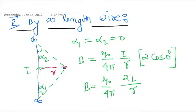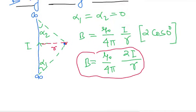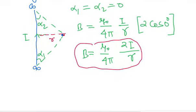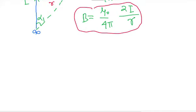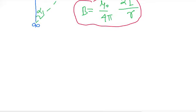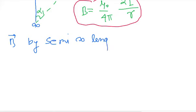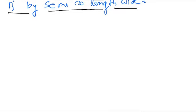So this is the magnetic field by infinite length wire. Similarly, we can find the magnetic field by semi-infinite length wire. What will be semi-infinite length wire? As a theory point of view, suppose one side of this wire is at infinity and the other side ends here, and you have to find the magnetic field at the end.